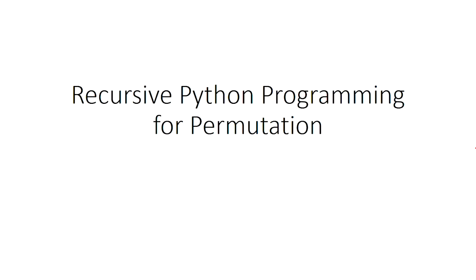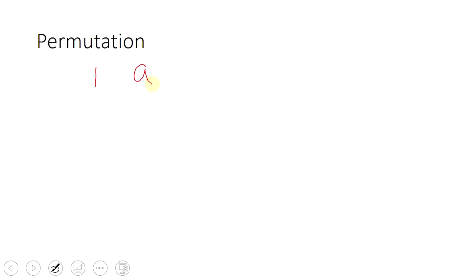Hi, in this video I'm going to show you how to create a program to output permutations in Python. Let's first take a look at what a permutation is: given some objects, you want to output all the possible permutations.